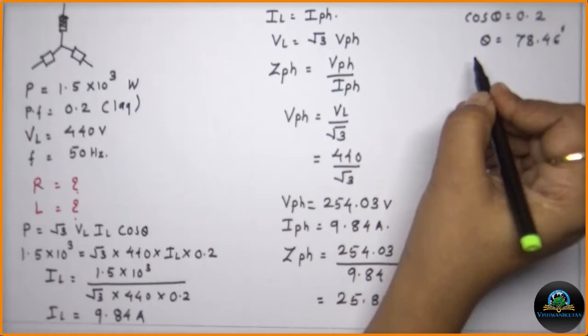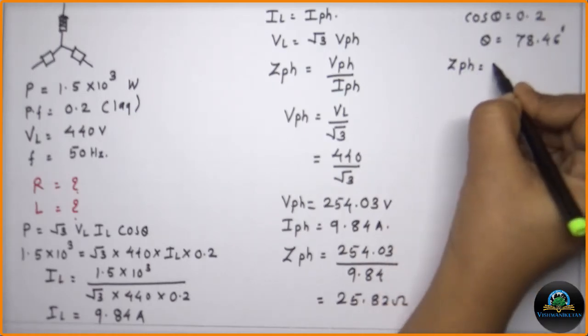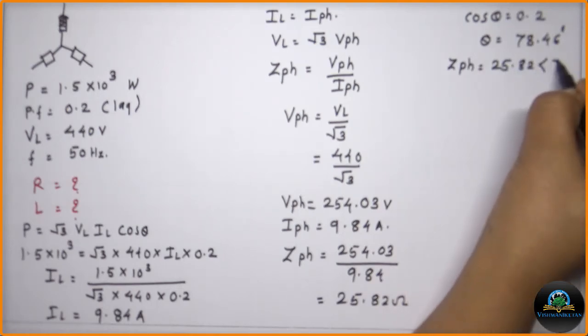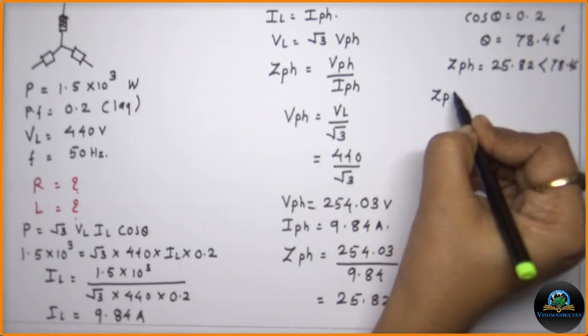Now I can write the value of the ZPH in the polar form. So it is equal to 25.82 with the angle 78.46 degrees.